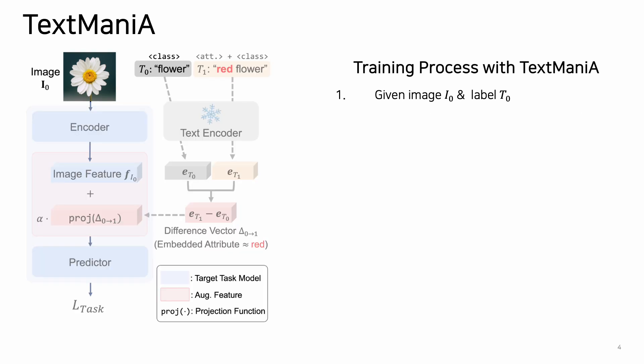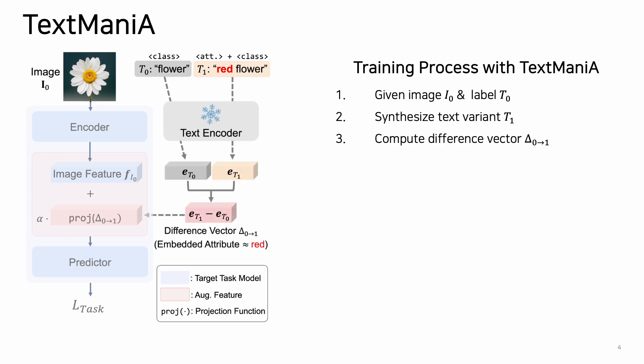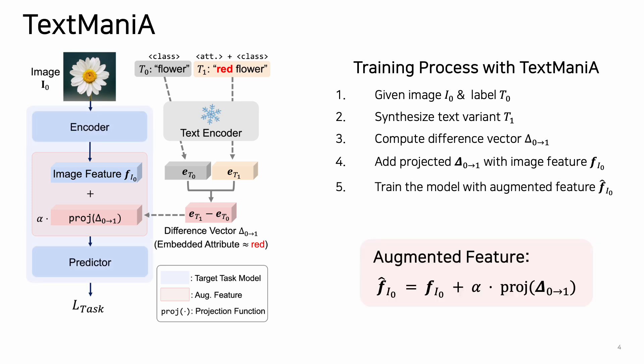This is the detailed training process with Text Mania. First, the image and the corresponding label are given as usual. We can synthesize the text variant by adding the attribute text. Then, we extract the text embedding from the pre-trained language model and compute the difference vector. We project this difference vector with a simple linear layer and use it as a perturbation on the image feature. Finally, the target task model is trained with the augmented feature.